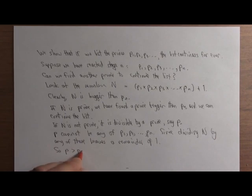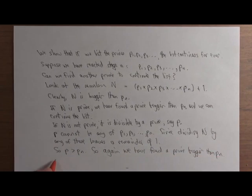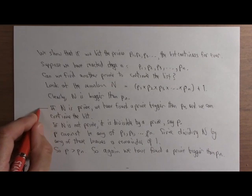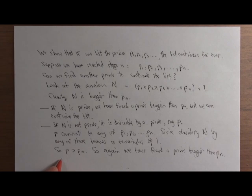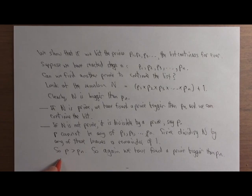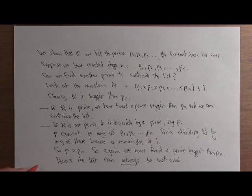So p is bigger than pn. That means we've found a prime number bigger than pn. Either way, if N is prime or if it's not prime, we've shown that there's a bigger prime than pn, which means the list can always be continued. And that proves that there are infinitely many primes.